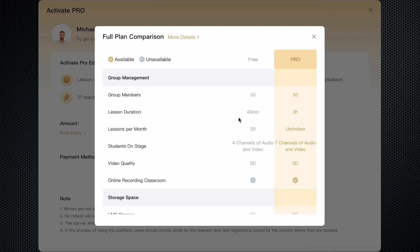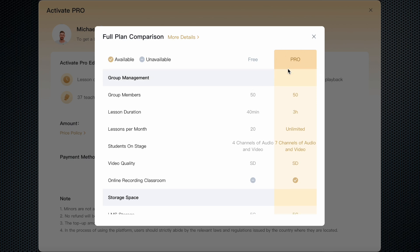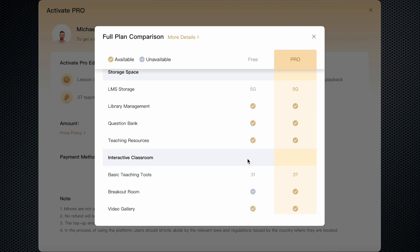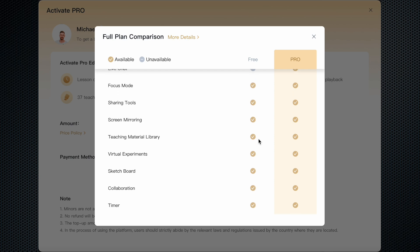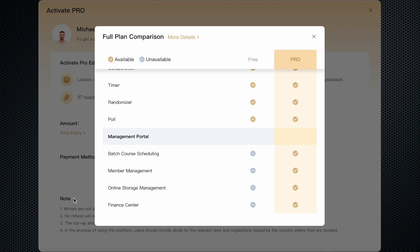The free version of ClassIn is great for small scale teaching or personal tutoring, but the pro version offers significantly more features. For instance, with the pro version, your lesson duration increases from 40 minutes to up to three hours and you can host unlimited classes per month compared to the 20 class limit on the free version. You also get more advanced features like the ability to record lessons, use breakout rooms and access additional teaching tools, such as the expanded graphic options on the blackboard. In addition, the pro version provides access to the management portal, which includes batch course scheduling, member management, online storage management, and even a finance center for tracking payments.